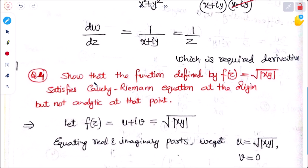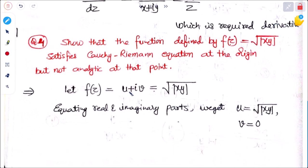Problem 4: Show that the function f(z) = √|xy| satisfies the Cauchy-Riemann equation at the origin but is not analytic at that point. Let f(z) = u + iv = √|xy|. Equating real and imaginary parts: u = √|xy| and v = 0 (since there is no imaginary part).